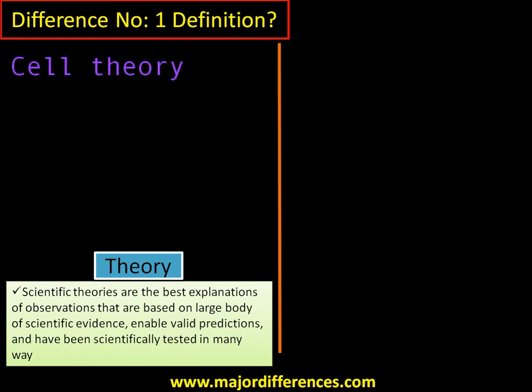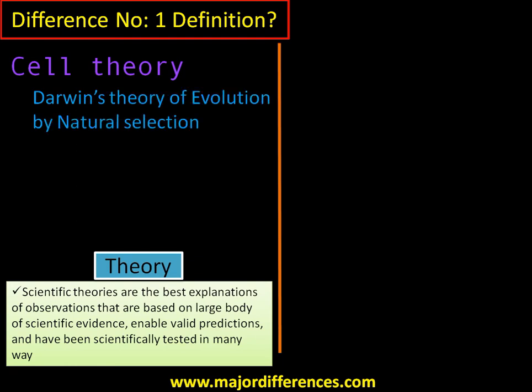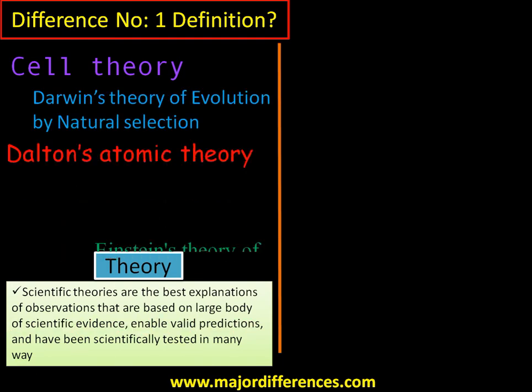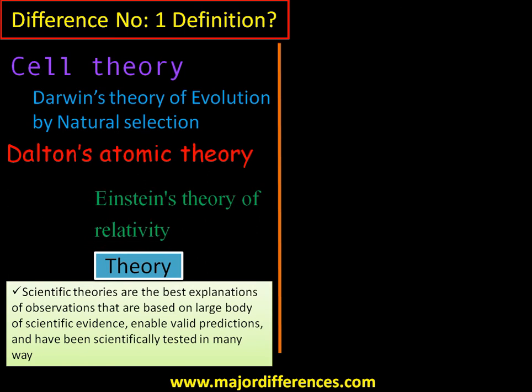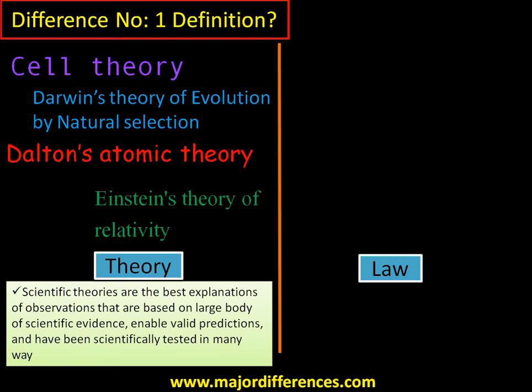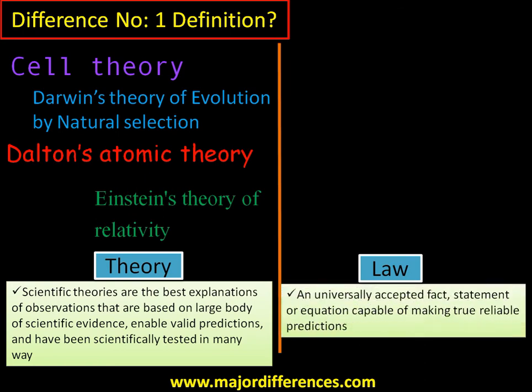For better understanding, let's take some examples of theories: cell theory — all organisms are made up of cells; Darwin's theory of evolution by natural selection; Dalton's atomic theory; and Einstein's theory of relativity. What about a law? A law is often a universally accepted statement or fact that can make true, reliable predictions.